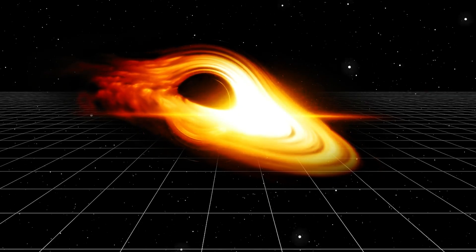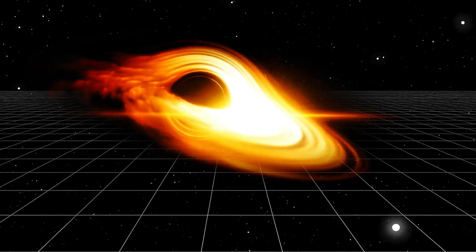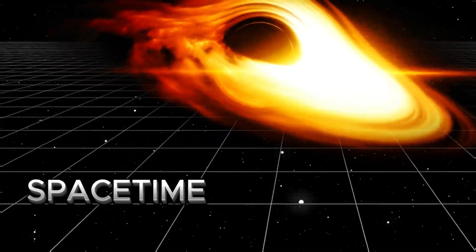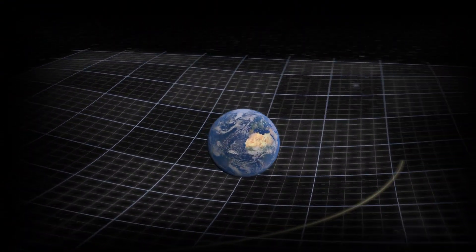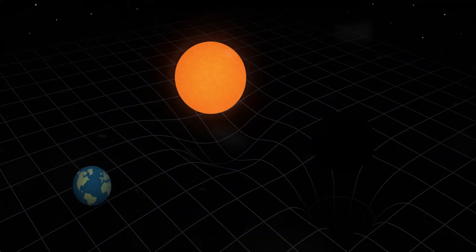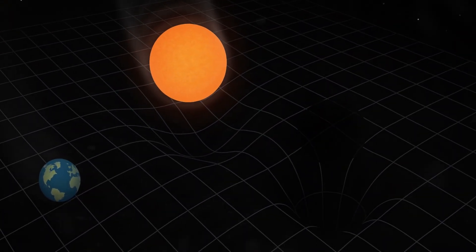In space, there is a dimension called space-time. Just imagine it as a flat surface where every object in space lays on. Every object with mass will curve this surface. The more mass, the more space-time will bend. And black holes totally bend it, forming these funnels. That means time stops there.